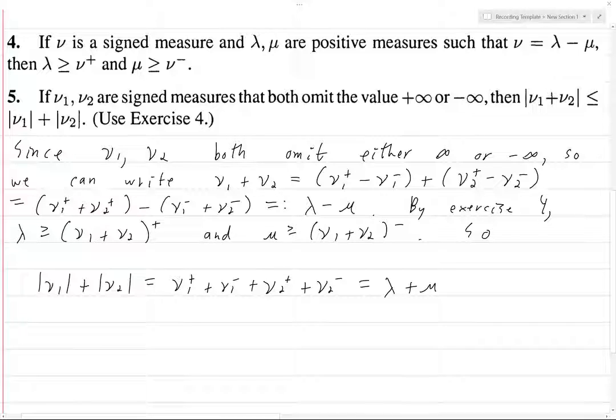And so now, what is this? This is greater than or equal to, by what we just proved, (ν₁ + ν₂)⁺ plus (ν₁ + ν₂)⁻, and that's just equal to |ν₁ + ν₂|, and we're done.